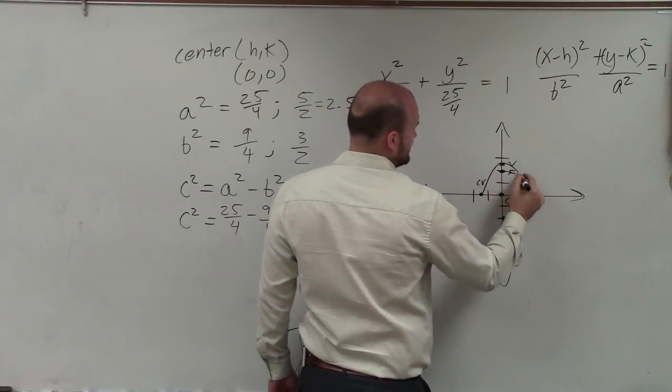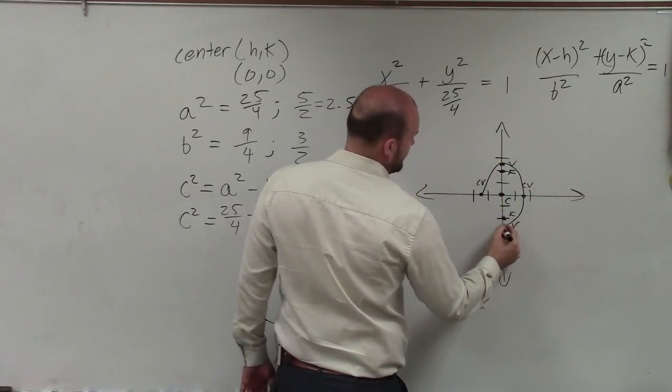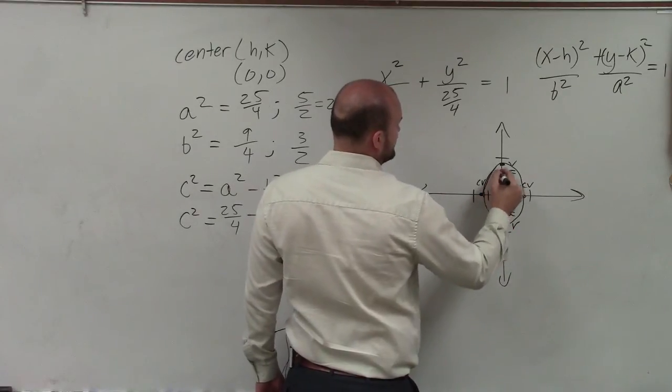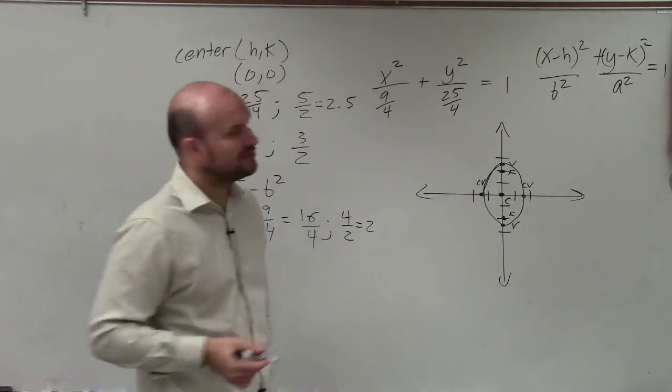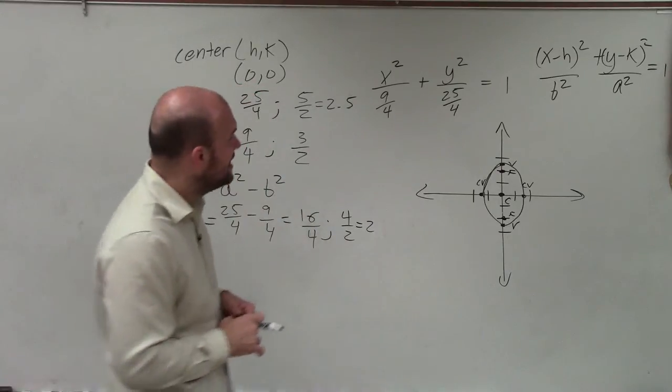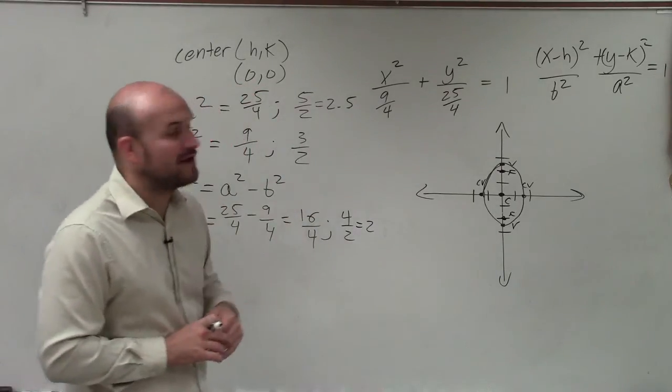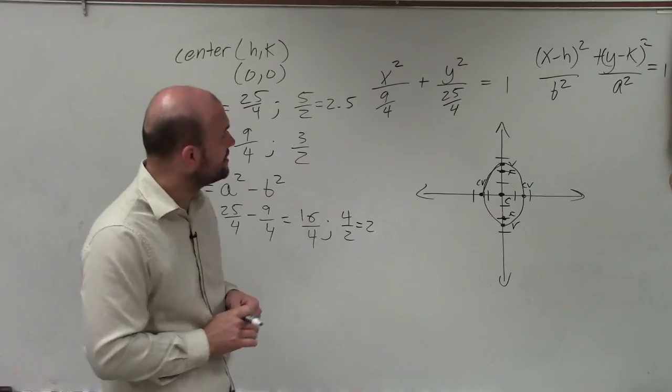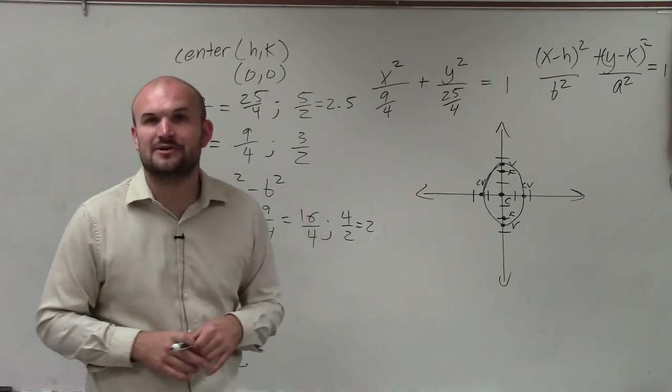So therefore, ladies and gentlemen, now we can just kind of graph going through the co-vertices and the vertices. And there's your ellipse graph. So there you go, ladies and gentlemen. That is how you graph an ellipse when given fractions for your a² and your b² with a center at 0, 0. Thanks.